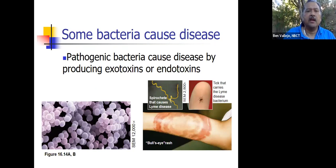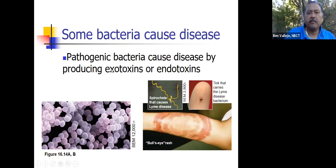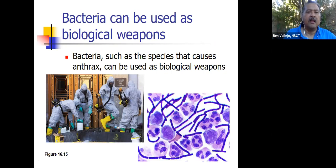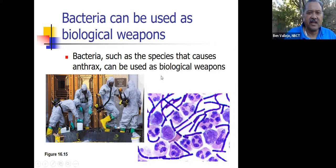Here are some pictures of bacteria. Pathogenic bacteria cause disease by producing exotoxins or endotoxins — a toxin is something poisonous, and exo means on the outside, endo means on the inside. Bacteria can also be used as biological weapons. Anthrax is one we know about. Several years ago, people were putting anthrax on letters and mailing them, causing problems at post offices. So bacteria such as the species that causes anthrax can be used as biological weapons.